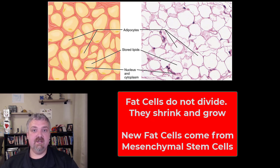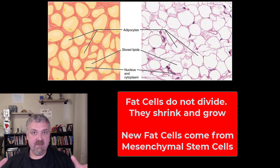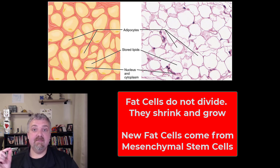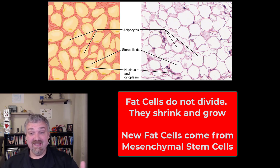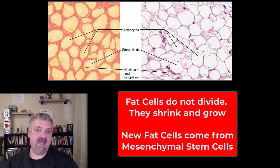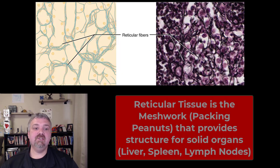Adipocytes do not divide, so your fat cells will shrink if you lose weight — they're not disappearing, they're shrinking. If you gain weight, your fat cells get larger. If your fat cells get full and there's nowhere else to put fat, mesenchymal stem cells will produce more fat cells. It's even believed that if you have liposuction, these stem cells will rebuild the fat cells removed.